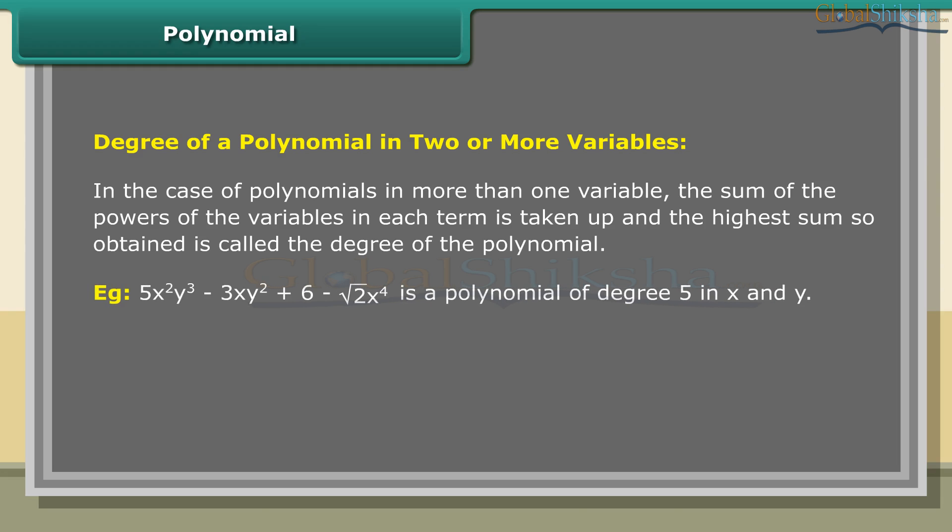Example: 5x²y³ − 3xy² + 6 − √2·x⁴ is a polynomial of degree 5 in x and y. Based on the number of terms, polynomials are classified as monomial, binomial, trinomial, and so on.